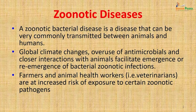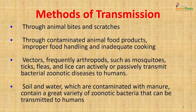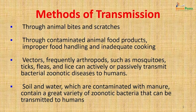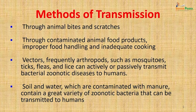Farmers and animal health workers, especially veterinarians, are at increased risk of exposure to certain zoonotic pathogens. These pathogens can be transmitted to man through animal bites and scratches, or through contaminated animal food products — specifically improper food handling and inadequate cooking. Vectors, frequently arthropods such as mosquitoes, ticks, fleas and lice, can actively or passively transmit bacterial zoonotic diseases. Soil and water contaminated with manure can also transmit zoonotic diseases to man.